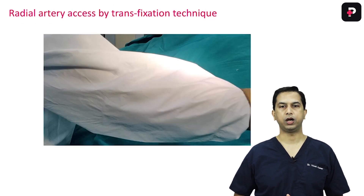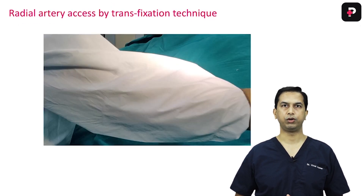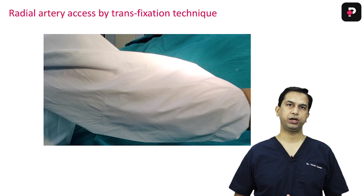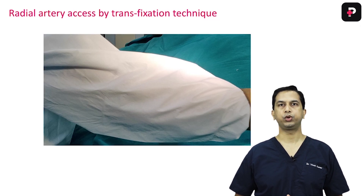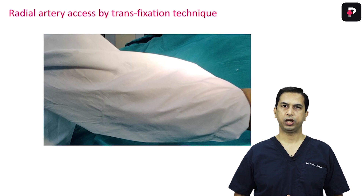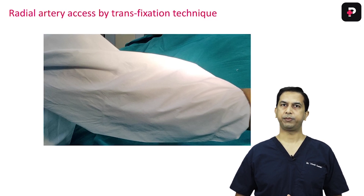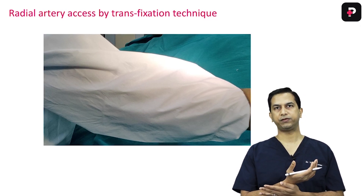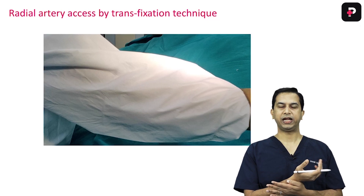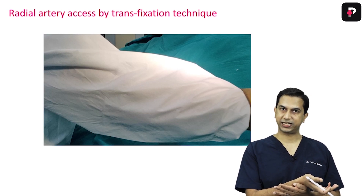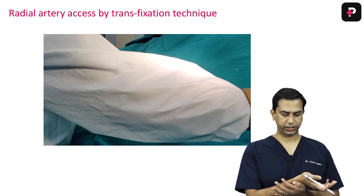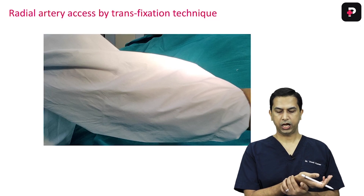Let us show you a case example of how a radial artery access is taken. It is important how you place the hand of the patient. You place the hand with a support on the back of the forearm and keep the hand hyperextended so that you fix the radial artery.